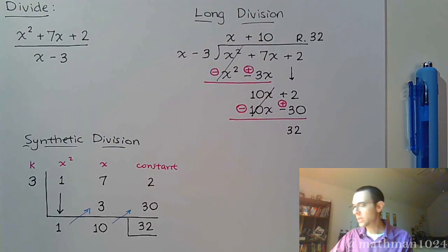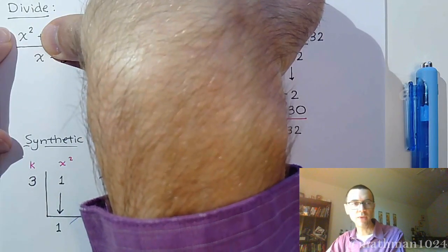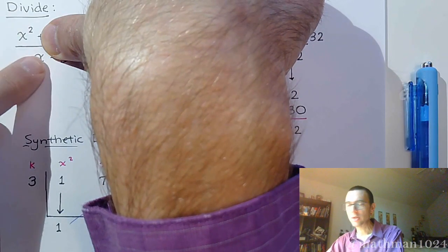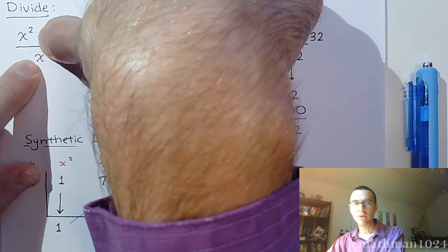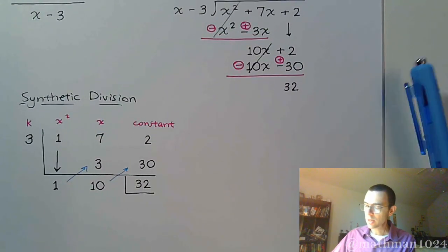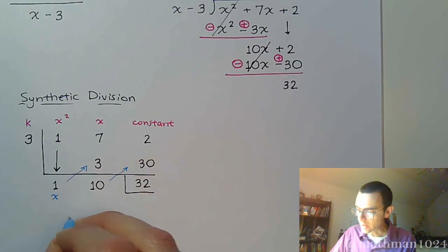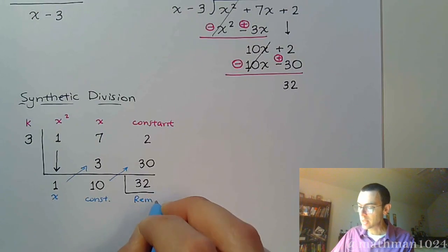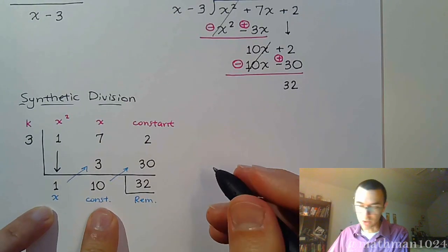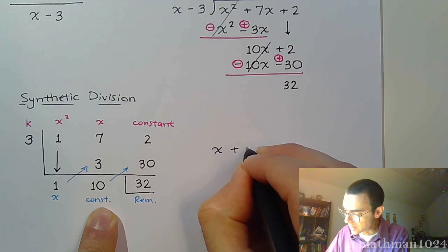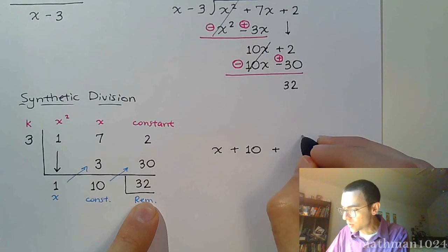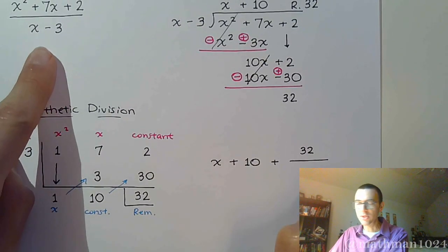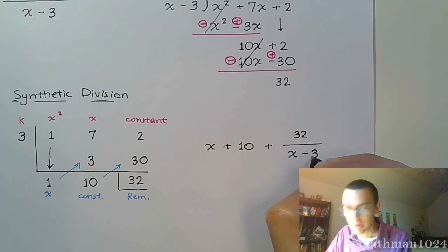In the original problem, x squared divided by x — if you subtract exponents, 2 minus 1 gives you 1 — so dividing by x means you lose one degree. That's what we see in the synthetic division results: what was x squared becomes the coefficient for x; what was the x-degree term loses a degree and becomes the constant term; and the last value, 32, is the remainder. So the answer is written as 1x plus 10, and then you take the remainder 32 over your divisor, which is x minus 3.